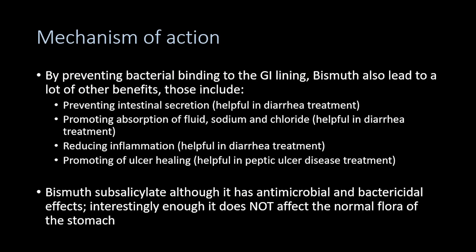Because bismuth prevents bacterial binding to the gastrointestinal lining — helpful in H. pylori and other GI infections — it also leads to prevention of intestinal secretion. This action is helpful in treating diarrhea, since intestinal secretion is one mechanism of diarrhea.